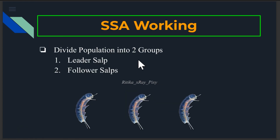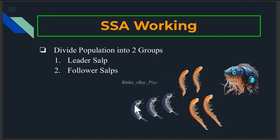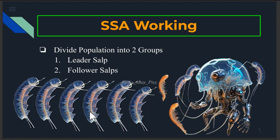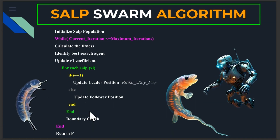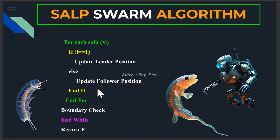The leader salp guides the movement toward the target, i.e., the optimal solution. Followers adjust their position based on the salp ahead of them, forming a chain-like structure that explores the search space. The steps are: initialize population of N agents, start the main loop, calculate fitness for each search agent, identify the best agent, update parameter c1, then update leader and follower positions, and check boundaries.